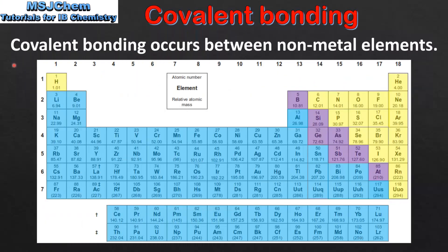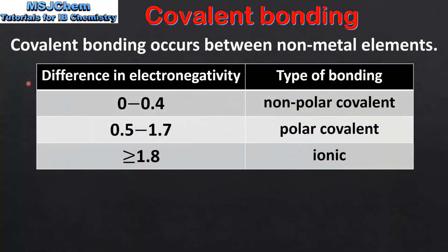Covalent bonding occurs between non-metal elements. In this periodic table the non-metal elements are shown in yellow, and as we can see these elements are found on the right hand side of the periodic table. These elements have small differences in electronegativity. From the table we can see that covalent bonding occurs between atoms that have a difference in electronegativity of up to 1.7 units.